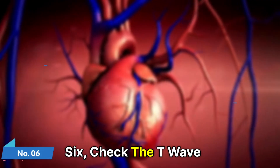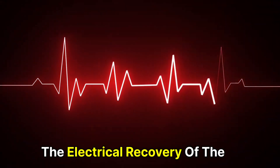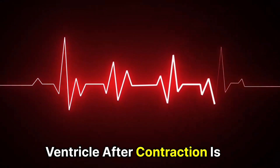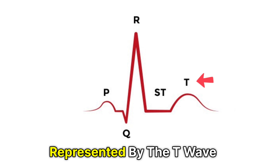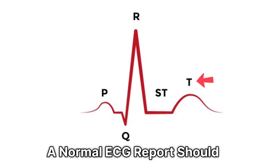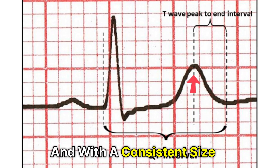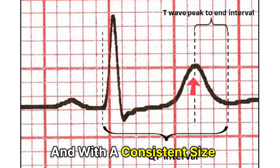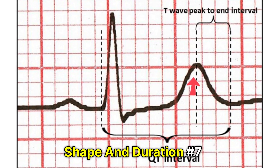Number 6: Check the T wave. The electrical recovery of the ventricle after contraction is represented by the T wave. A normal ECG report should have a T wave that is upright and with a consistent size, shape, and duration.